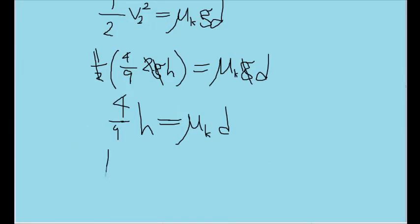So now all that's left to do is to algebraically solve this formula for D by dividing both sides of the equation by mu k. And so we end up with 4 times h divided by 9 times mu k, where h is the height of the ramp and mu sub k is the coefficient of kinetic friction.